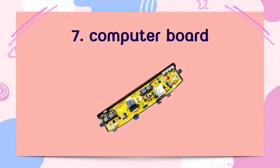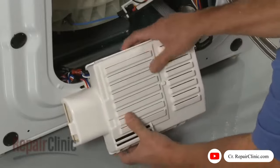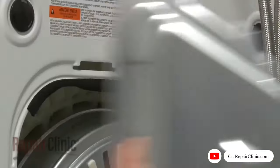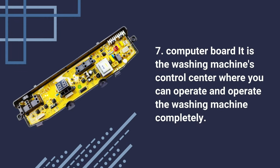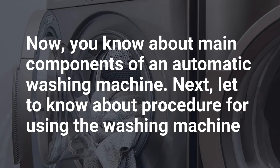The last one, Computer Board. It is the washing machine control center, which you can use to operate the washing machine completely. Now you know about the main components of an automatic washing machine. Next, let's learn about the procedure for using the washing machine.